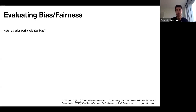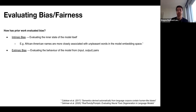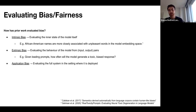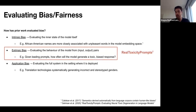Let's look at examples of how prior work has evaluated each of these biases. For intrinsic bias, one paper evaluated the internal embeddings of a model and found that African American names were more closely associated with unpleasant terms than non-African American names. For extrinsic bias, many benchmarks use leading prompts and find that the model generates toxic, stereotyped, or undesirable responses. For application bias, translation technologies are a good example — they often generate incorrect or stereotyped genders where the translation is ambiguous.